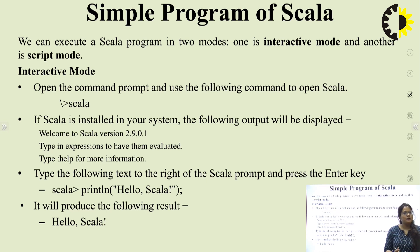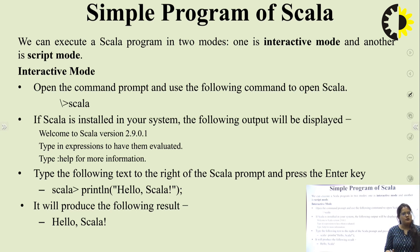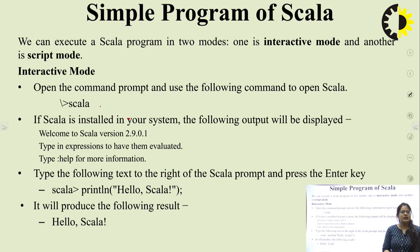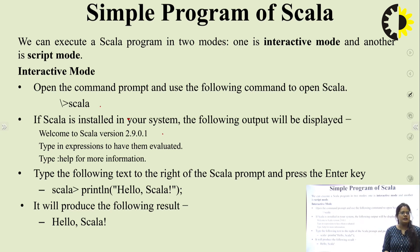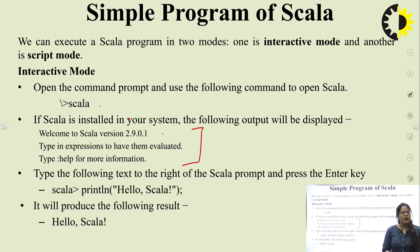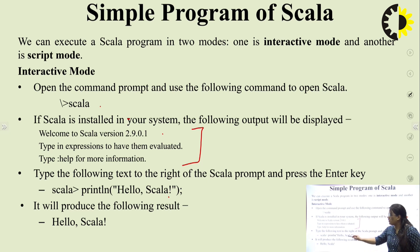We can execute a Scala program in two different modes: interactive mode and script mode. In interactive mode, open the command prompt and use the command 'scala' to open Scala. If Scala is installed, the output will display: 'Welcome to Scala version 2.9.0'. You can then type expressions. Type 'println("Hello, Scala")' and press Enter; the output will be 'Hello, Scala'.